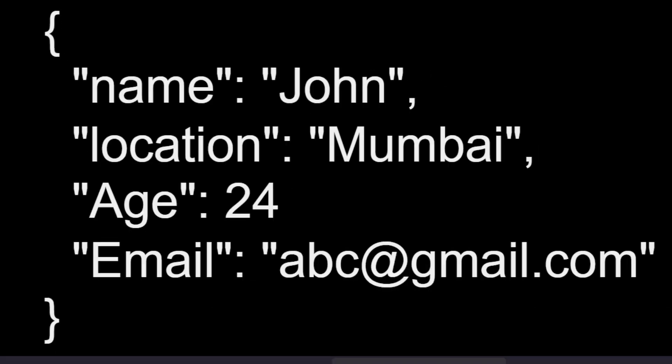We said Elasticsearch can store data as documents or JSON documents. A JSON document is the fundamental unit of data in an Elasticsearch database — it's like a row in a database table. For example, a JSON document can be something like a person's bio data: name, location, age, email.